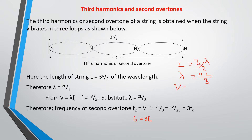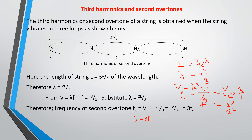From V equals lambda times f, f₂ for the second overtone equals V over lambda. Substituting lambda equals 2L/3, we have f₂ equals V over (2L/3) multiplied by 3, giving 3V over 2L. Comparing this to the fundamental frequency V over 2L, we find that f₂ equals 3f₀.